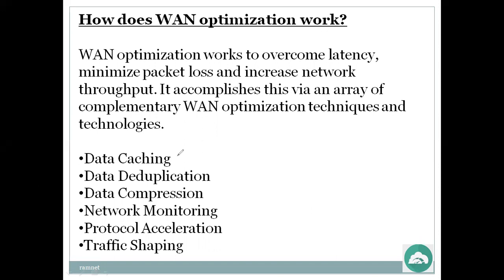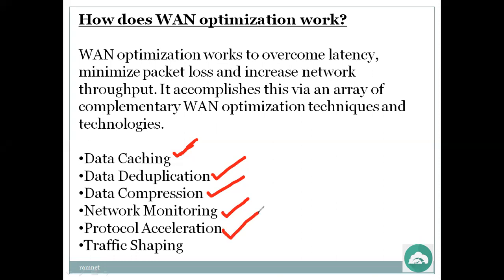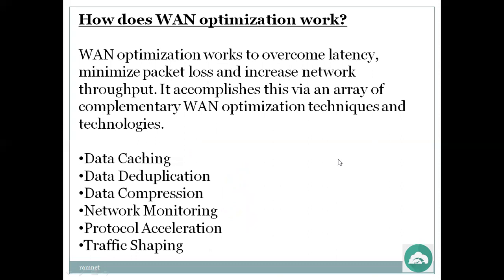How does WAN optimization work? It works to overcome latency, minimize packet loss, and increase network throughput. It accomplishes this via complementary techniques: data caching, deduplication, data compression, network monitoring, protocol acceleration, and traffic shaping.